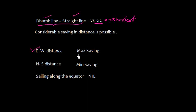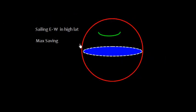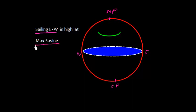In the east-west direction we can have maximum saving. However, in the north-south direction the saving is minimum because you are traveling along the path of meridians. Also, if we are sailing along the equator, the difference between great circle sailing and rhumb line sailing is almost nil. If you are sailing in high latitude in the east-west direction, the saving is maximum — the difference between great circle distance and rhumb line distance is maximum.